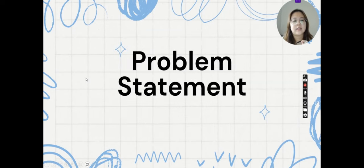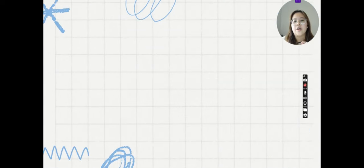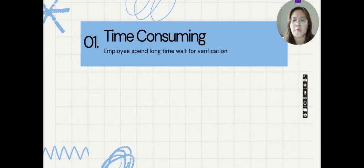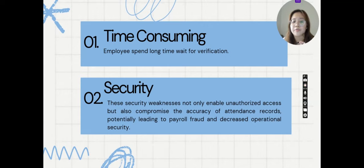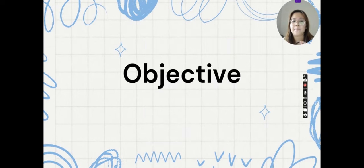We're going to talk about the problems in the Clock In and Clock Out system. The first issue is time consuming — employees need to spend a long time waiting for verification. The second issue is security: the weakness not only enables unauthorized access, but also compromises the accuracy of attendance records, potentially leading to payroll fraud and decreased operational security.